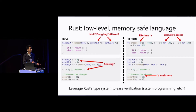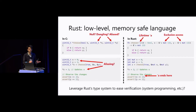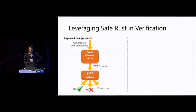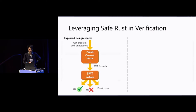It is also interesting because Rust is being used more and more for system programming, providing a unique opportunity for scaling program verification. The question of leveraging the Rust type system to simplify verification and reasoning about aliasing is not new and has been explored a lot in the past few years, leading to quite a few frameworks.